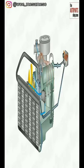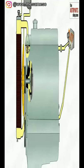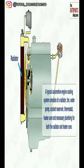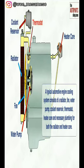A typical automotive cooling system consists of a radiator, fan, water pump, coolant reservoir, thermostat, and heater core.